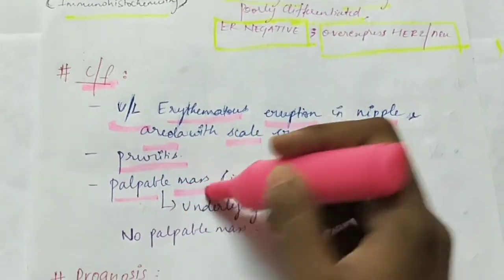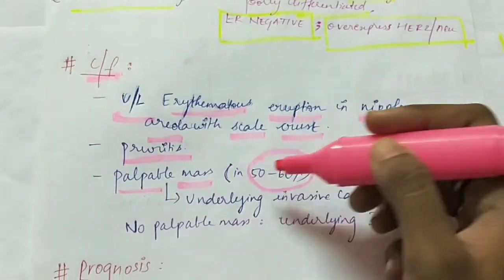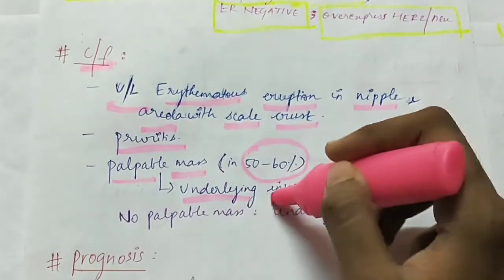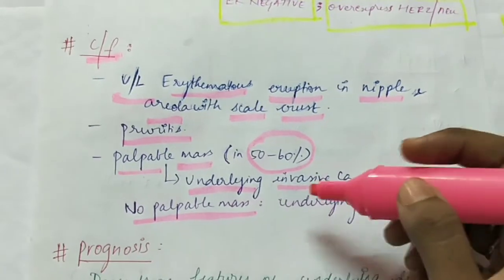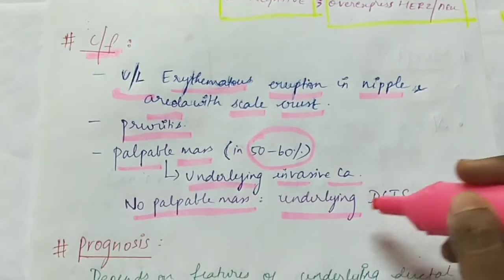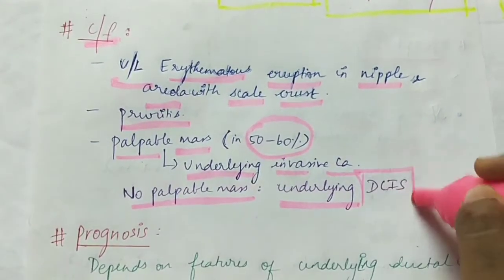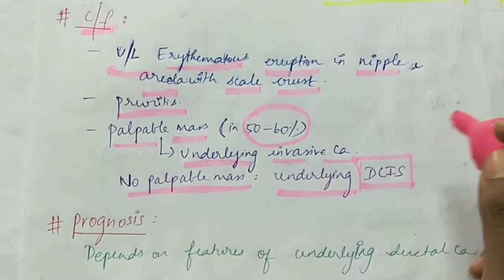There will be palpable mass in 50 to 60% of the cases which suggests the underlying invasive carcinoma. If there is no palpable mass, it means the underlying pathology is ductal carcinoma in situ, but not invasive carcinoma.